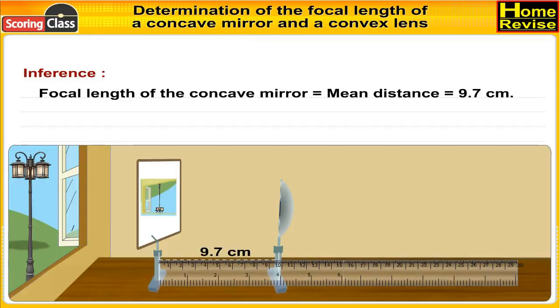Inference: Focal length of the concave mirror is equal to mean distance, and that is 9.7 cm.